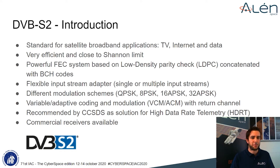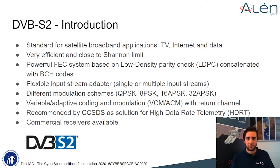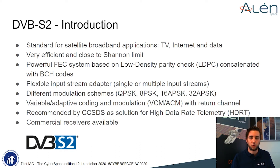What is DVB-S2? DVB-S2 is a standard for satellite broadband applications developed in 2003. It is very efficient in terms of bandwidth and provides a powerful forward error correction system allowing quasi-error-free operation very close to the channel limit. New modulation schemes were added and with a flexible input stream adapter and variable and adaptive coding and modulation, DVB-S2 can adjust transmission parameters of individual frames based on channel conditions. It is also recommended by CCSDS as a solution for high data rate telemetry. Furthermore, there are a lot of commercial receivers on the market, making reception very straightforward.